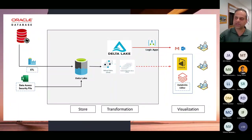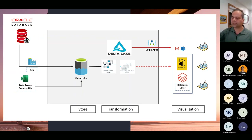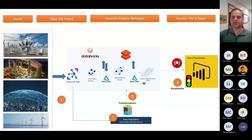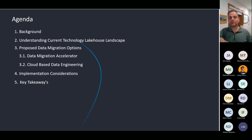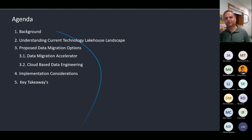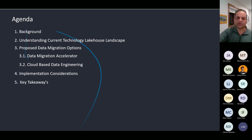This high-level architecture covers Oracle database ingestion, delta lake architecture - store, transformation, visualization - and streaming data. Nowadays everything is streaming: wind turbines, planes, smart cities, smart municipalities. We need to ingest that data. Today you will understand the current technology landscape from lakehouse architecture, data migration options, cloud-based data migration implementation, and key takeaways. I will share the slides as well.